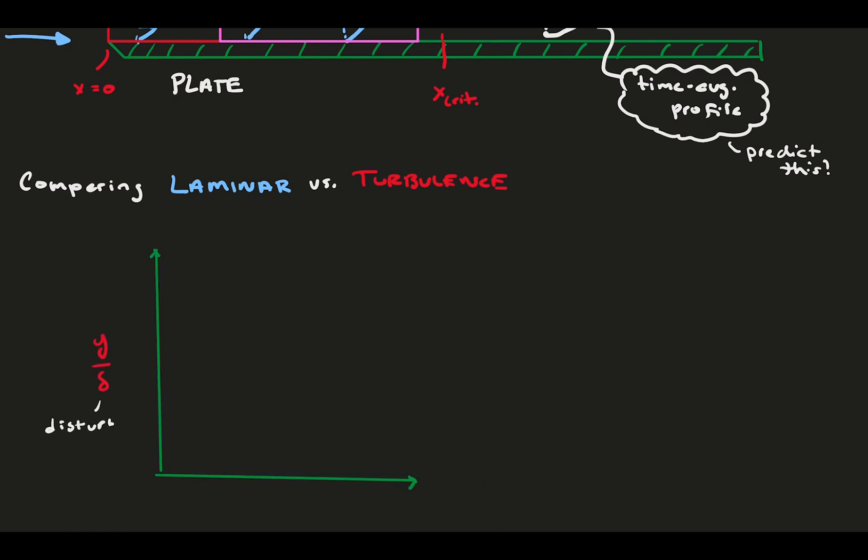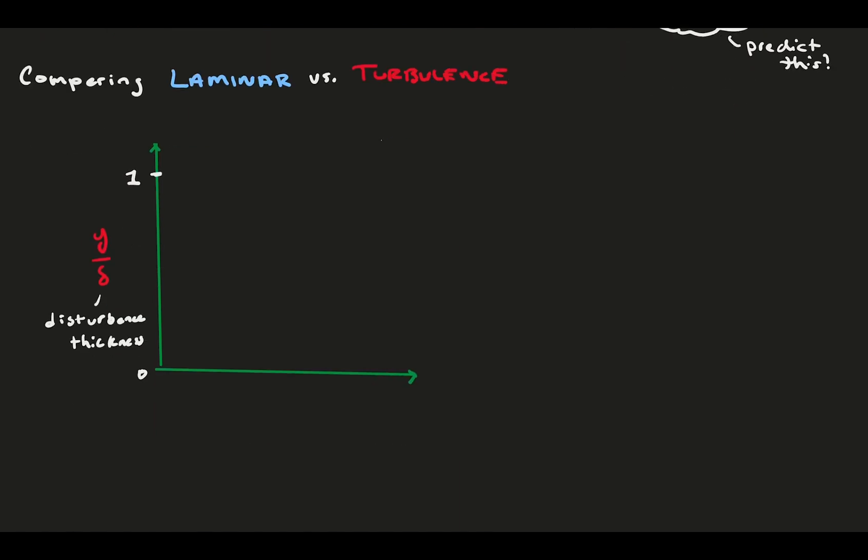On the y-axis, we have the wall-normal distance from the wall. Here, we normalize by the disturbance thickness so that, no matter what the boundary layer is, it goes from 0 to 1. On the x-axis, we have the flow mean velocity, but we normalize by the freestream velocity so that these profiles are general in regards to their flow speed. The x-axis also goes from 0 to 1, no matter what the boundary layer is.